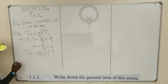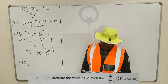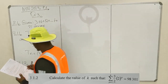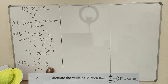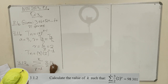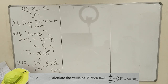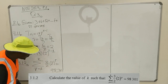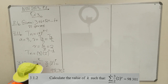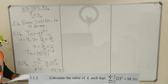Go to the next one, 3.1.2. They are saying we have given a series from P equals 1 to K, where the general term is given, and we are told that the sum is equal to 98,301. So when you add all the terms from P equals 1 to K of this general term, they add up to 98,301.